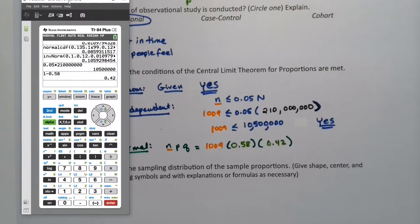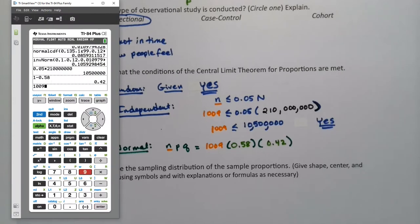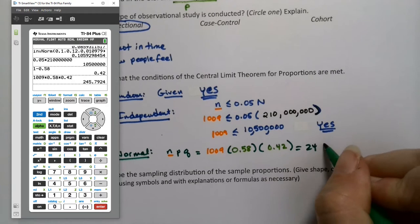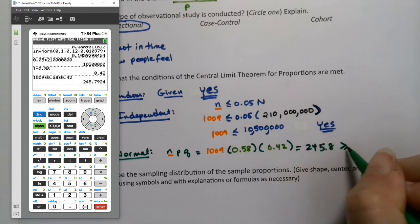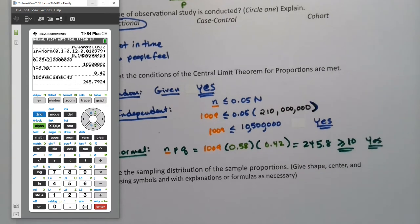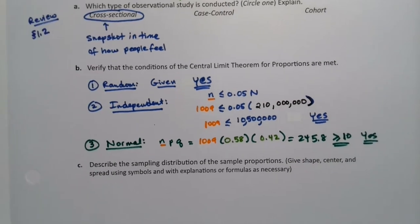In other words, 42 and 58 make 100. And, of course, if you don't believe me, you can always check it. So I need this to work out. I need 1,009 times 0.58 times 0.42. It's 245.8. And you know what 245.8 is? Bigger than 10. And that's all you need. You just need it to be bigger than 10, which it is. So yay.